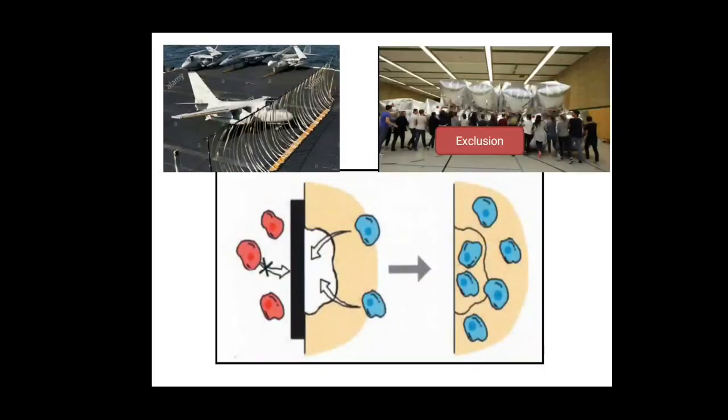So we need to do something, that is we need to exclude the undesirable cells by creating a barrier. This picture of aircraft might help you to memorize it. We need to exclude the cells which we don't want to repopulate.